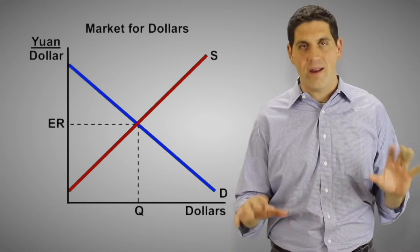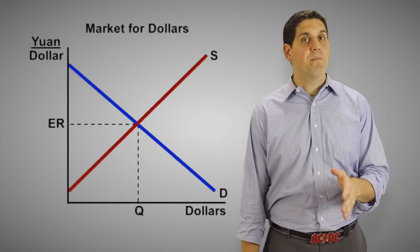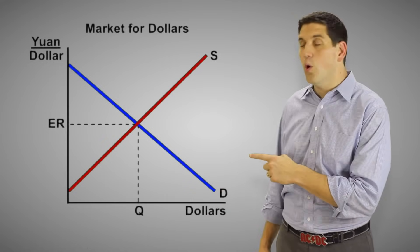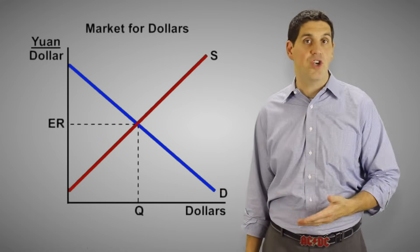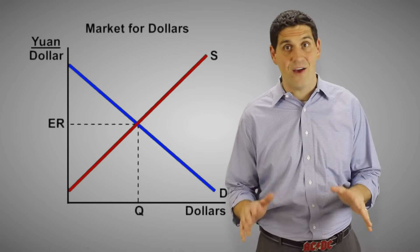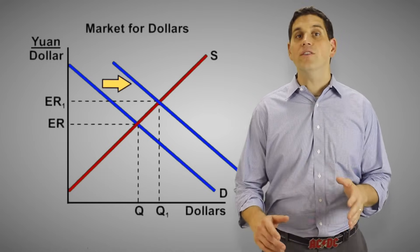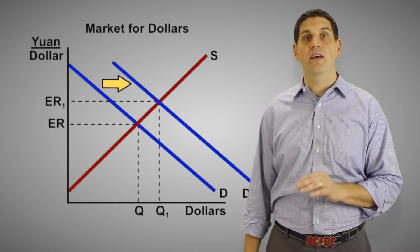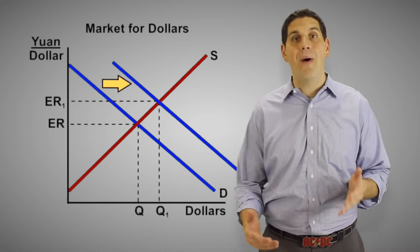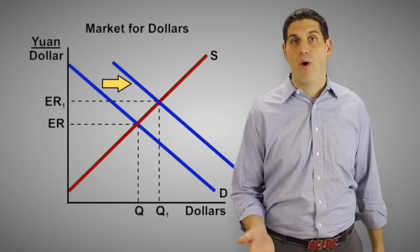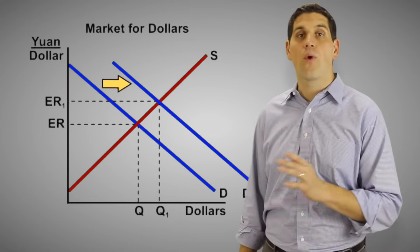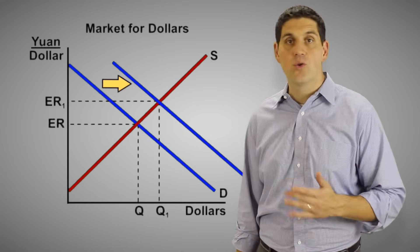Instead of having a floating exchange rate that can go anywhere, let's say the United States decides to fix their exchange rate with China. So in this make-believe world, let's say the United States has a whole lot of exports to China. Now let's assume that the demand goes up for dollars because the Chinese want to buy more American products. So now the dollar is going to appreciate relative to the Chinese Yuan.